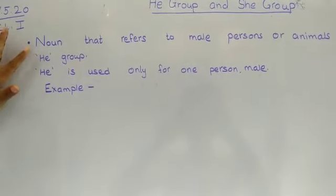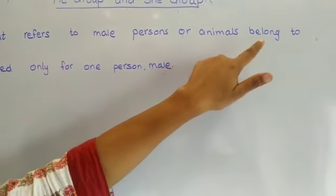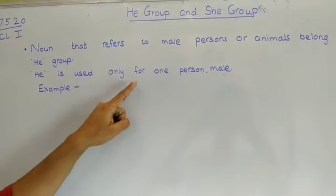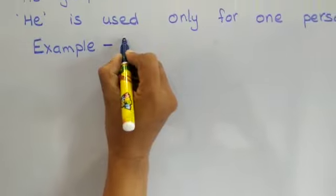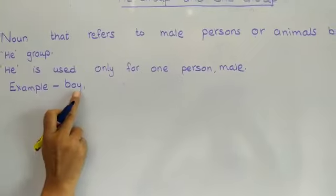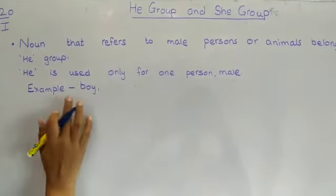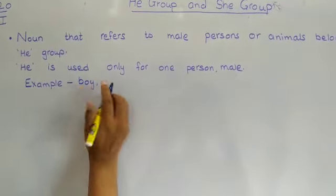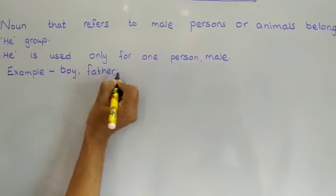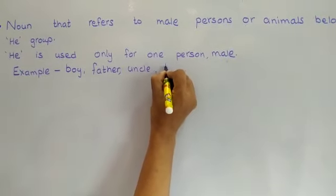Nouns that refer to male persons or animals belong to the he group. He is used only for one person — male. For example: boy. One person, he. I am not writing boys. So one person, male: boy, father, uncle, or brother.